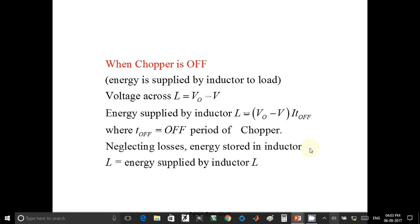When chopper is OFF, energy is supplied by the inductor to the load. Voltage across L is equal to V output minus V. Energy supplied by the inductor L is equal to V output minus V into I into T off, where T off is equal to off period of the chopper. Neglecting losses, energy stored in the inductor L is equal to energy supplied by the inductor L.